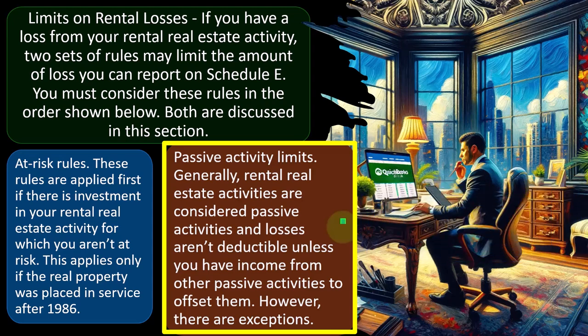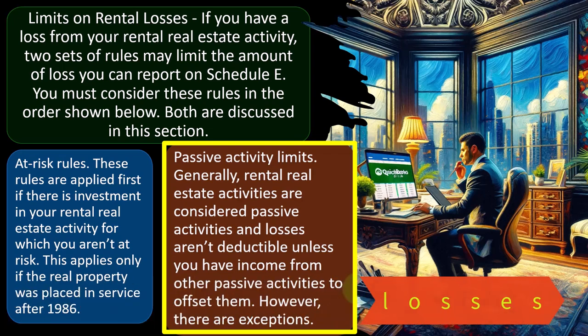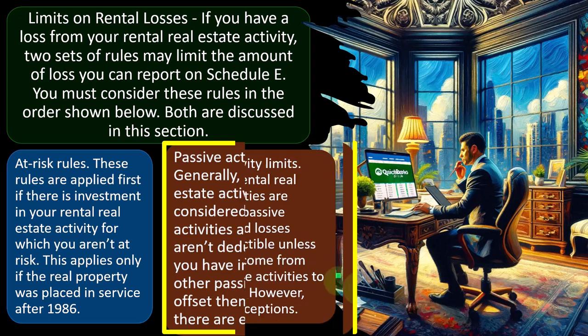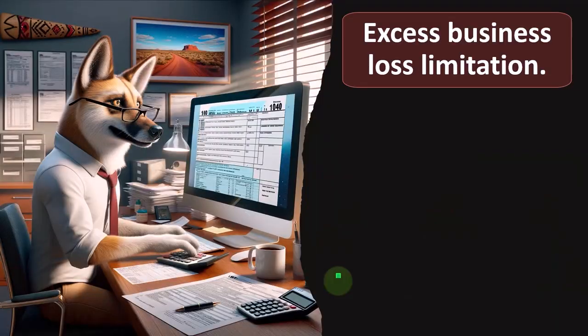Generally, rental real estate activities are considered passive activities and losses aren't deductible unless you have income from other passive activities to offset them. Passive activities have their own lane — you can only group losses against passive income. You can't go out of that lane to offset W-2 income or Schedule C income. That's the general rule, however, there are exceptions.